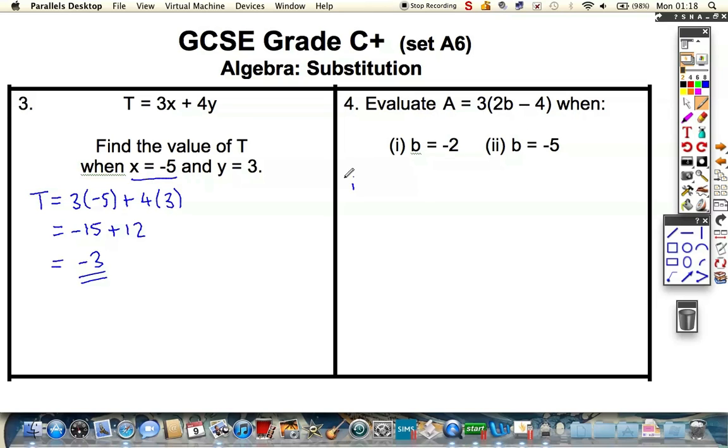And we've got two parts. We've got one expression here for A, and we've got to evaluate it for two different values of b. So, let's start ahead. So, we've got to write the whole thing out. A is equal to 3 lots of 2b, which is 2 times minus 2. Then you take away 4. So, again, let's break it down into steps.